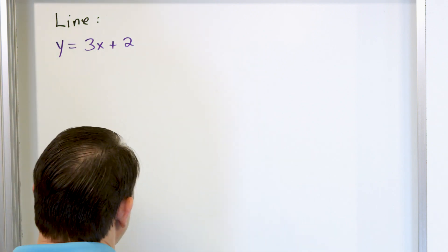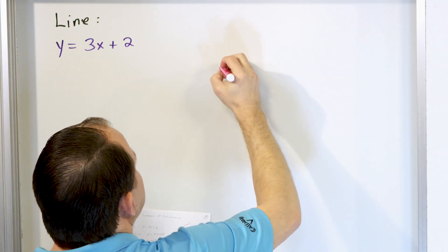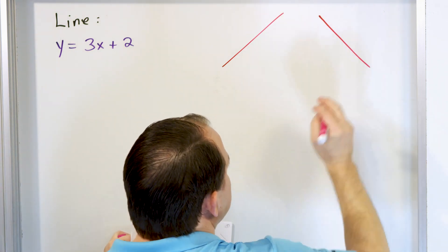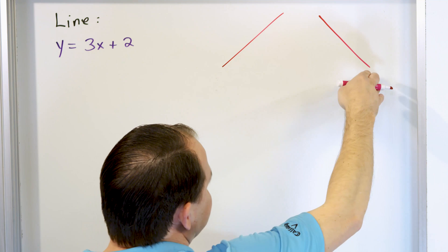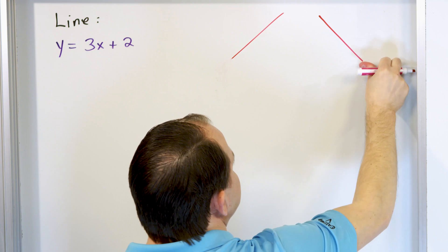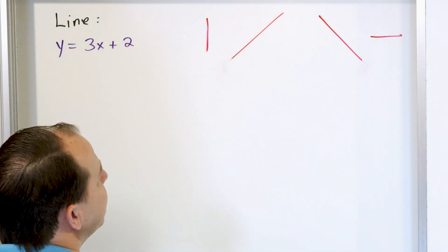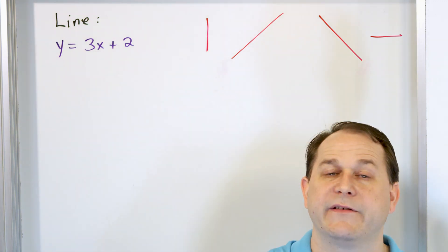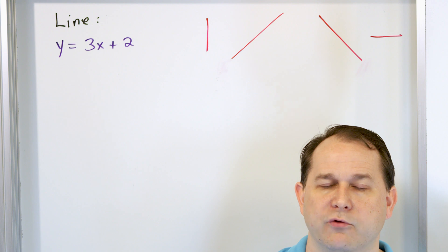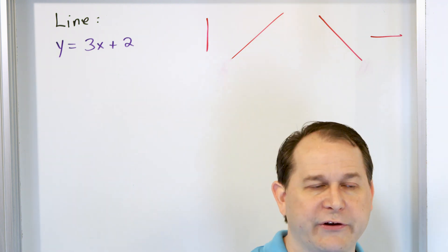I'm not going to graph this line — that would take too much time. But in general, lines can have slants up and to the right, or slants down and to the right — a positive slope or a negative slope. You can also have horizontal lines and vertical lines. When we had two of those lines graphed on the same graph paper, we called it a system of linear equations and were looking for intersection points.